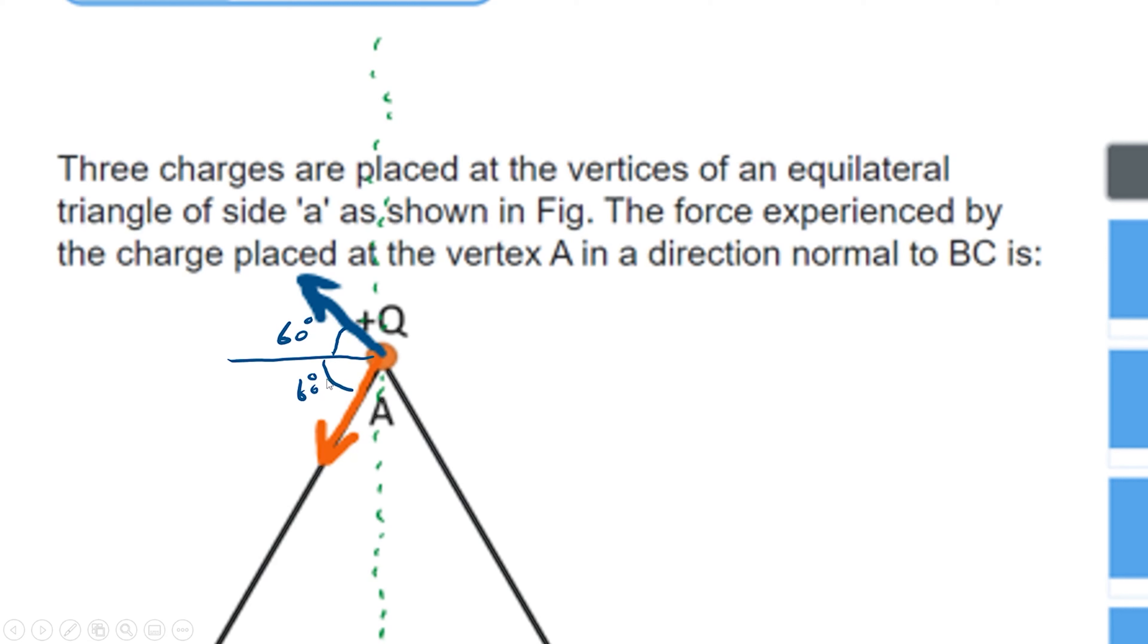The components of the two forces are the same, only the direction differs. For example, if we talk about x-axis and y-axis components. Now, if the x-axis components are the same, then we will add them only. But the y-axis components are in opposite directions with equal magnitude.